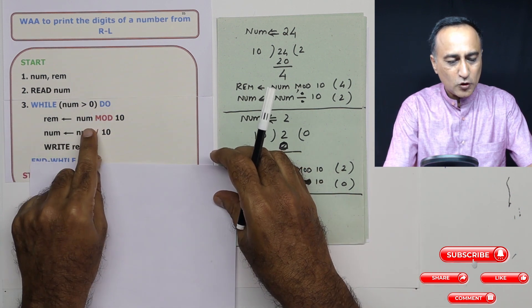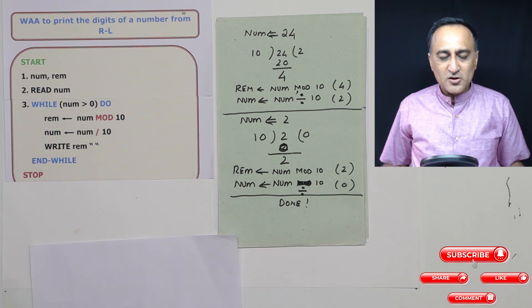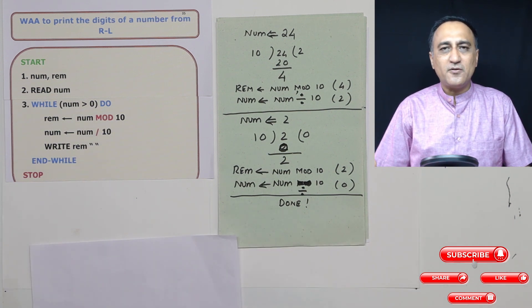0 is greater than 0? No. So I am coming here to end while and I am going to stop. So this should give you an idea how I split a number from right to left one digit at a time.